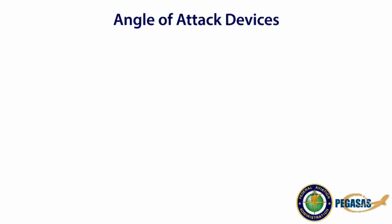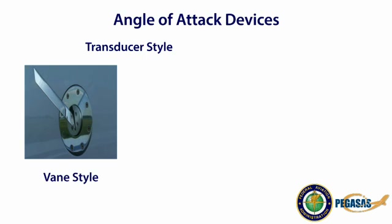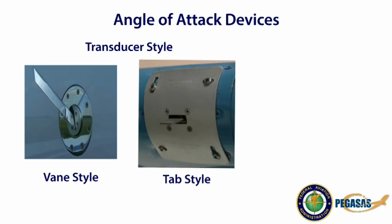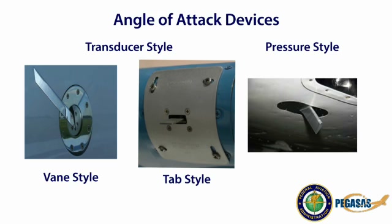There are two main styles of angle of attack devices. The first is a transducer style, which can be further divided into two subcategories: a vane style, which rotates to align with the relative wind, and a tab style, which measures the stagnation point of the airflow impacting the wing. The other AOA device is a pressure style, which measures the vector of the relative wind by comparing the pressure from two different ports. It is important to be aware, based on the manufacturer of your AOA device, how the angle of attack is being measured.